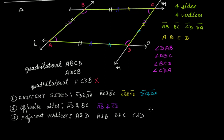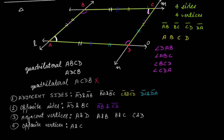Similarly for opposite vertices — just as we found opposite sides, vertex A and vertex C are not adjacent, so A and C are opposite vertices. Then vertex B and vertex D are also opposite vertices. So A and C, and B and D, are the opposite vertices of this quadrilateral.